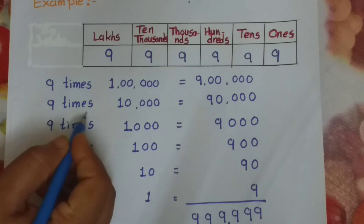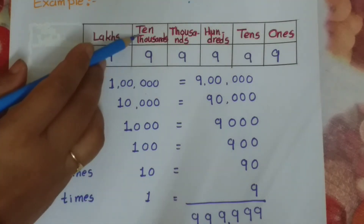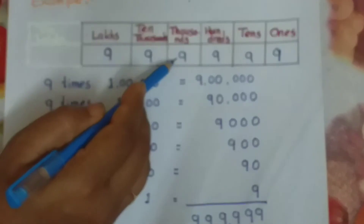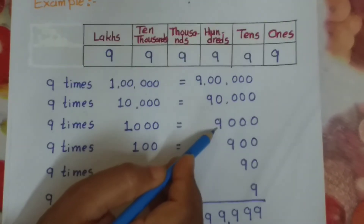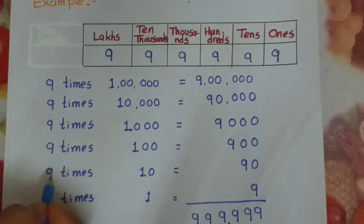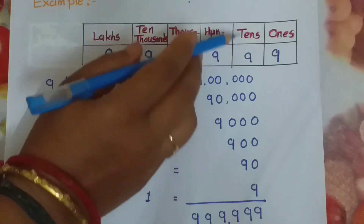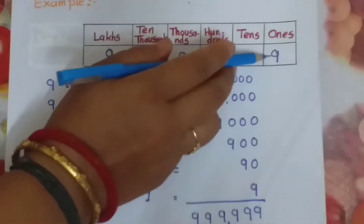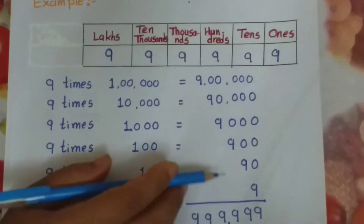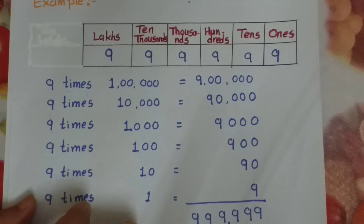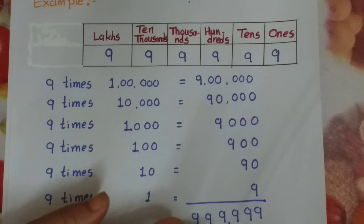9 times 10,000 gives 90,000. 9 times 1,000 gives 9,000. 9 times 100 gives 900. 9 times 10 gives 90. 9 times 1 gives 9. If we do the addition, then we get the answer 9,99,999.